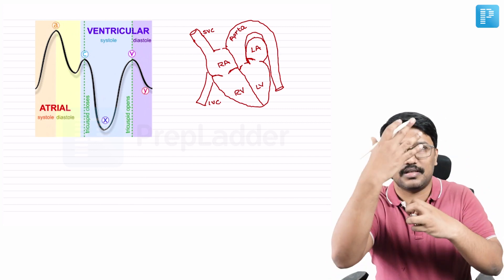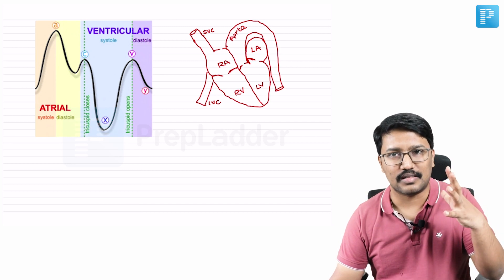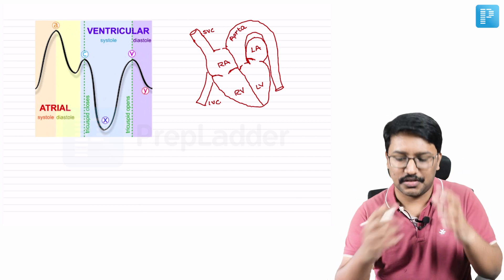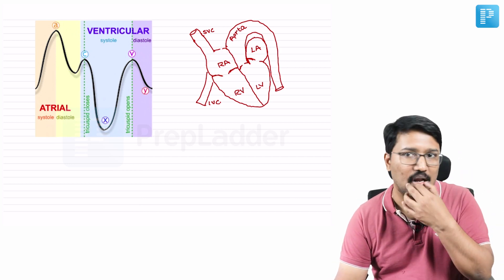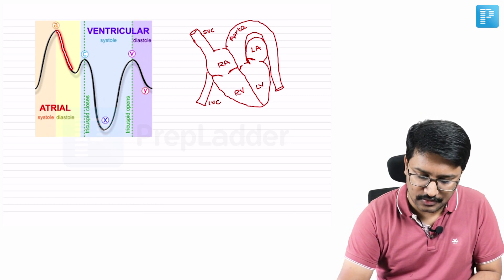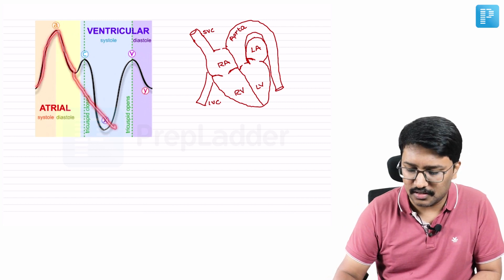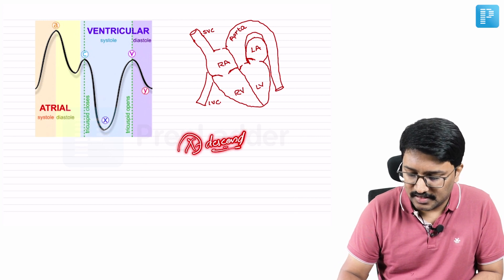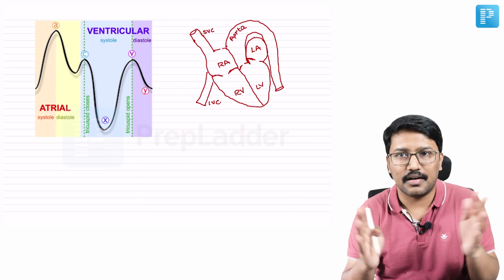Once the atria start relaxing after contraction — atrial diastole — pressure inside the right atrial chamber starts dropping. This gives rise to a descent, broadly called the X descent. X stands for relaxation — atrial relaxation causes the X descent. But this X descent is further divided into two segments: X and X-dash descent.